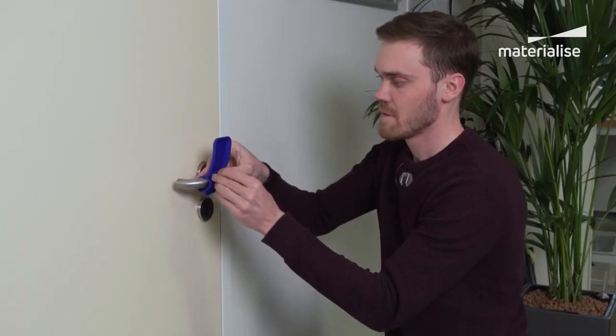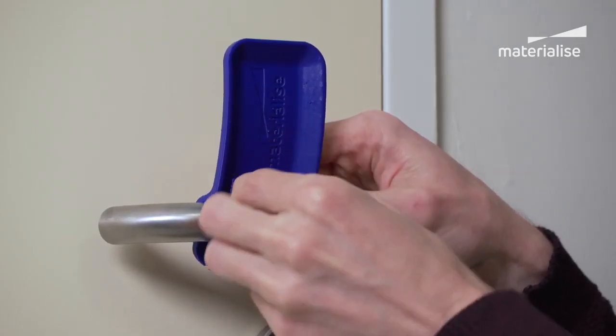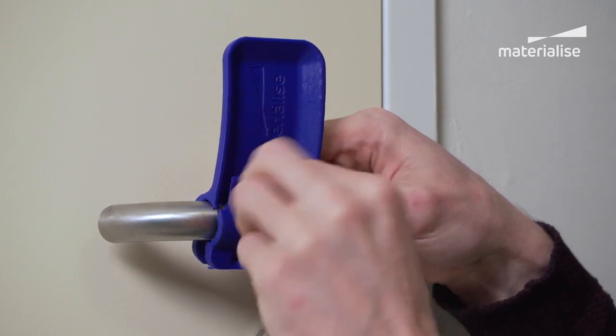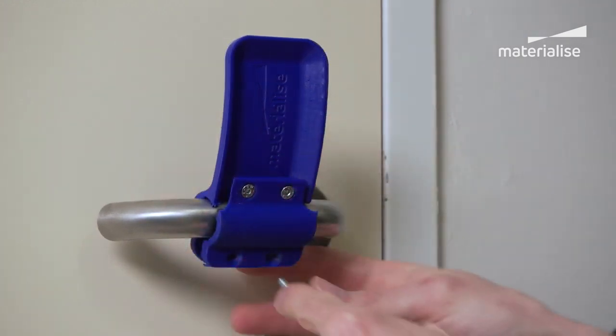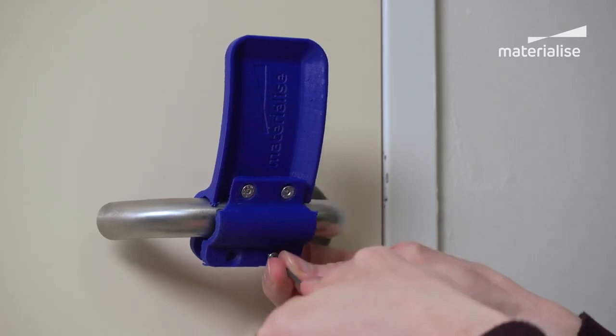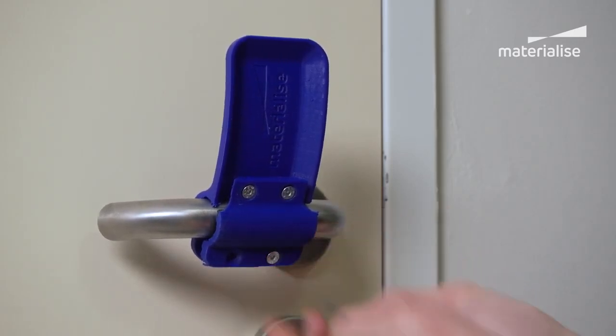In the top we position the shorter screws before we mount the bottom screws. At the bottom we can put longer screws so the door opener fits on different sizes of diameters.